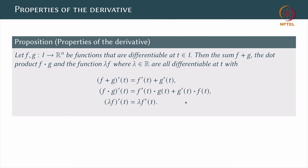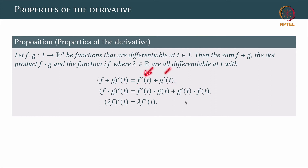Since everything is just done term-wise, you can expect that all the familiar properties of the derivative will be true. Suppose you have two functions f and g from I to R^n — recall I will always denote an interval in R. Suppose f and g are differentiable at the point t; then the sum f plus g and the dot product f dot g are differentiable at t. The derivative of f plus g is nothing but the derivative of f plus the derivative of g, both taken at the point t. Note these two are vectors, so we can obviously add them.